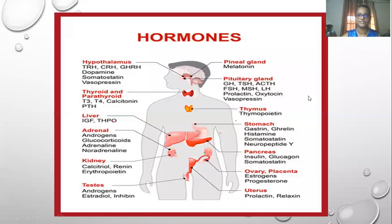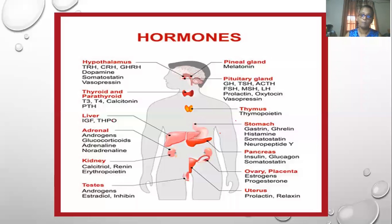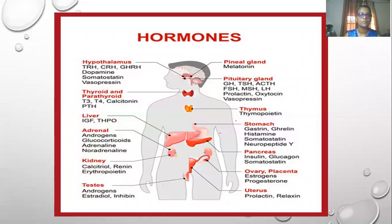What are hormones? The endocrine system is a network of glands and organs located throughout the body. It is similar to the nervous system in that it plays a vital role in controlling and regulating most of our body's functions. However, while the nervous system uses nerve impulses and neurotransmitters for communication, the endocrine system uses chemical messengers which we call hormones to regulate our organs and organ function.